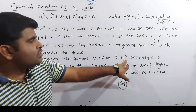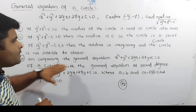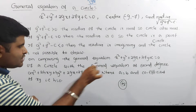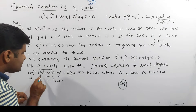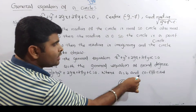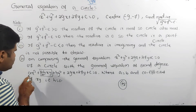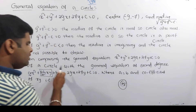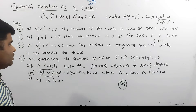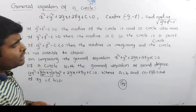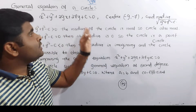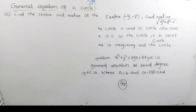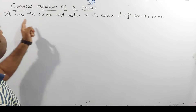Note: when comparing the general equation, the coefficient of xy must be 0, and the coefficient of x squared and y squared must each be 1. To find the center and radius of a circle, we compare the given equation to the general equation of a circle.